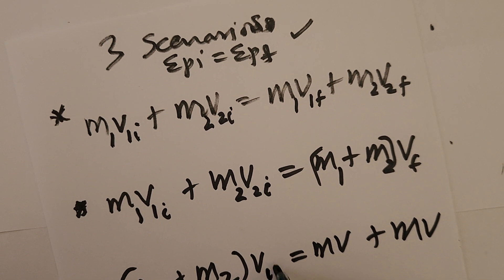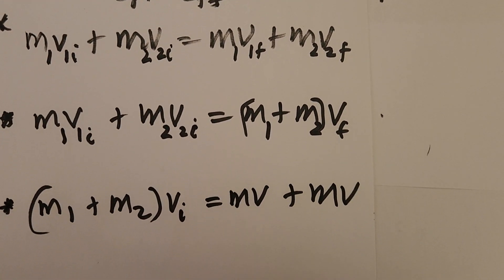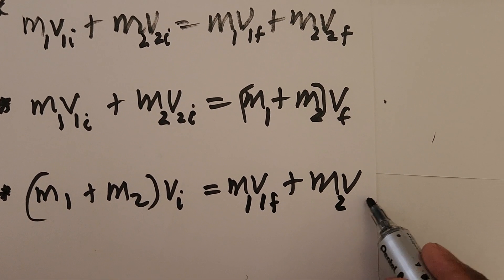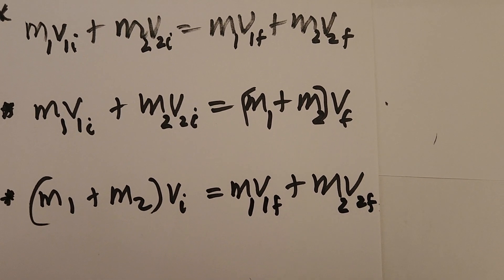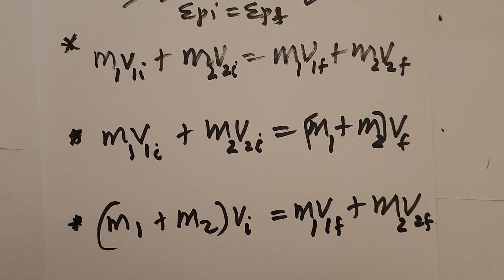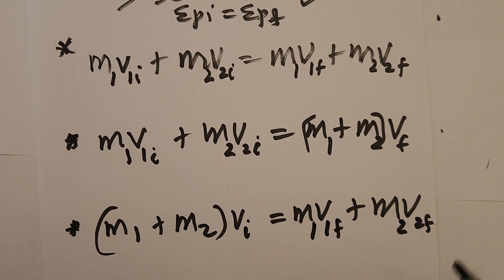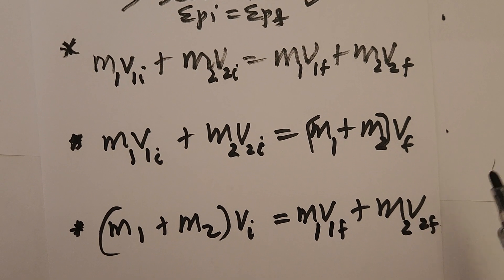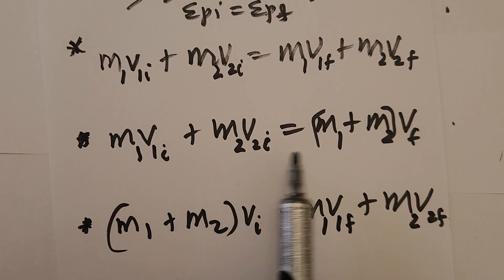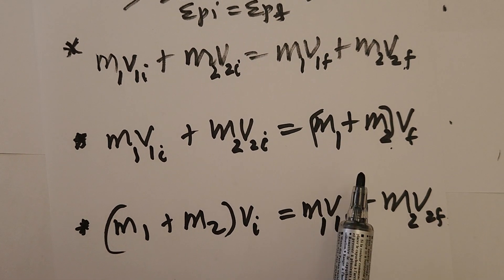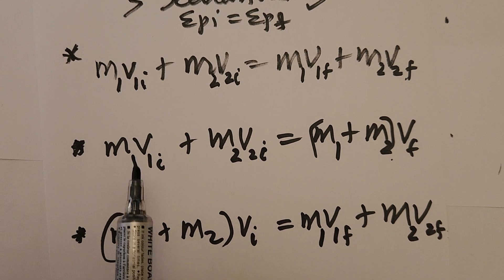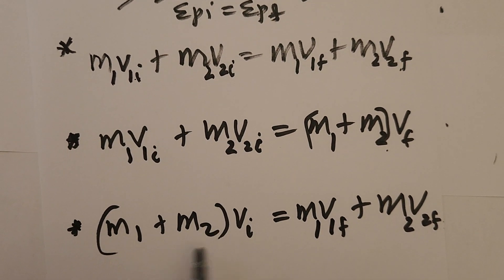Scenario three: the objects were combined before the collision and then separate after. The equation becomes (M1 plus M2)V_i equals M1V1f plus M2V2f. You can also use the general first equation for all scenarios, recognizing that in scenario two V1f equals V2f, and in scenario three V1i equals V2i.